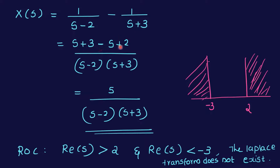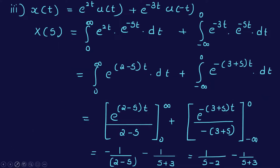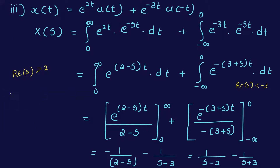Combining: [-(s+3) - (s-2)] / [(s-2)(s+3)] = (-2s-1) / [(s-2)(s+3)], or equivalently 5 / [(s-2)(s+3)]. The ROC requires Re(s) > 2 for the right-sided part and Re(s) < -3 for the left-sided part. Since these do not overlap, there is no valid ROC — the Laplace transform does not exist.